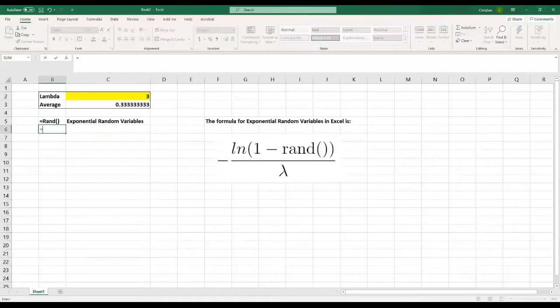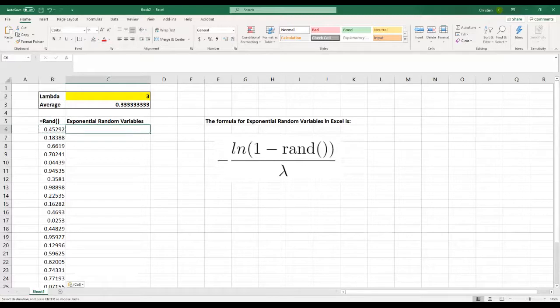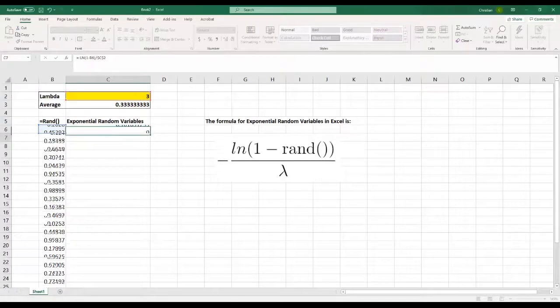you're just trying to create random variables and create a bunch of those. Then the formula is indicated as here. It's negative the logarithm of 1 minus the random variable and then divide the entire thing by lambda.